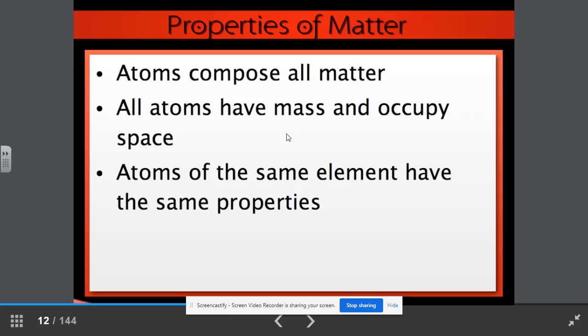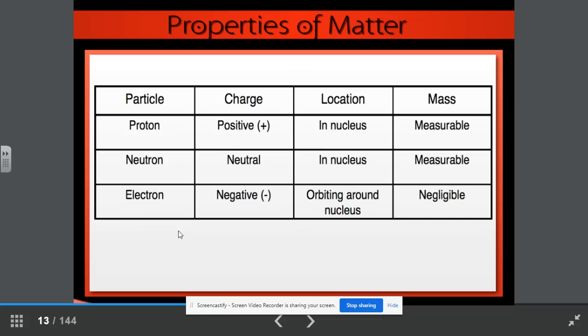Let's look at this chart for a minute. We have the three parts of the atom, including the proton, the neutron, and the electron. The proton has a positive charge. It is located in the nucleus, and its mass is measurable. The neutron, it has a neutral charge. Neutron, neutral. It is located in the nucleus, and its mass is also measurable. The electron has a negative charge. It's found orbiting the nucleus, and its mass is so tiny that it has what we call a negligible mass.